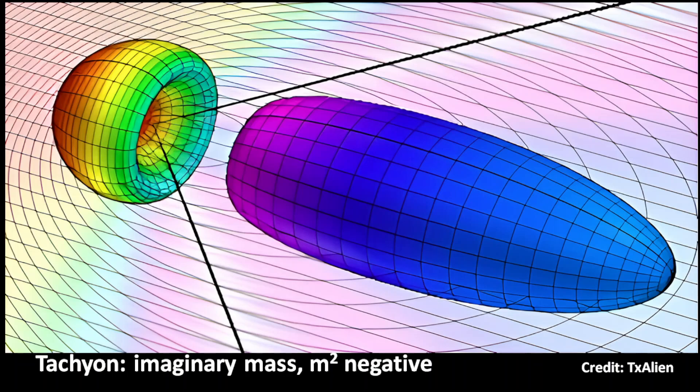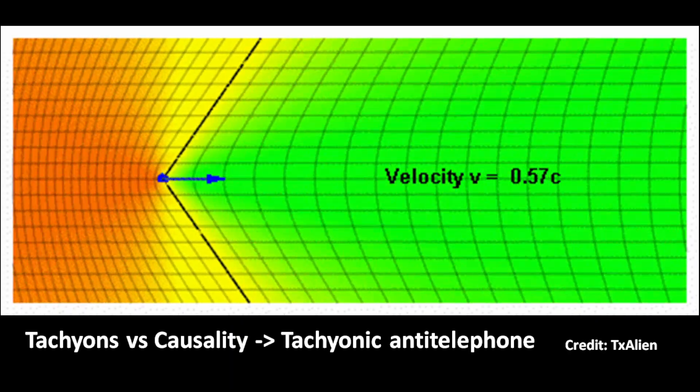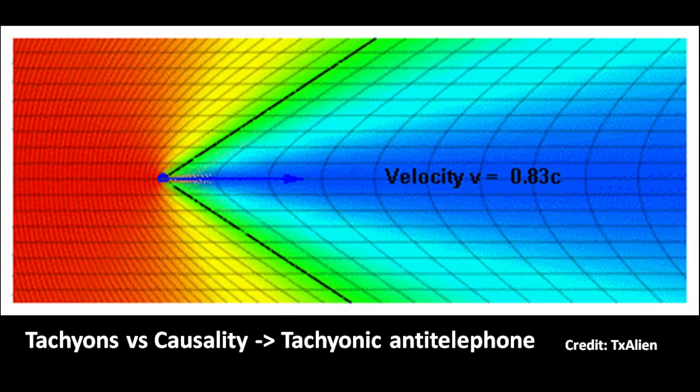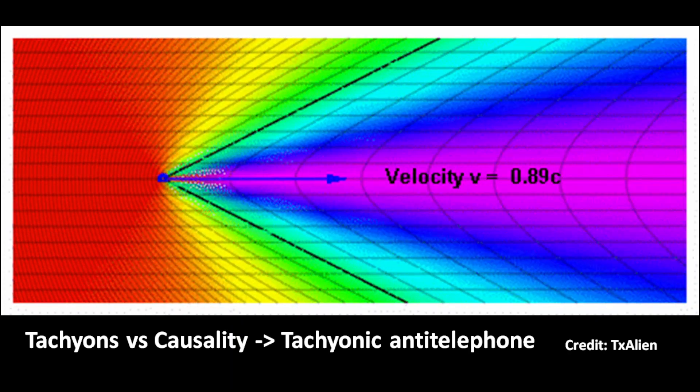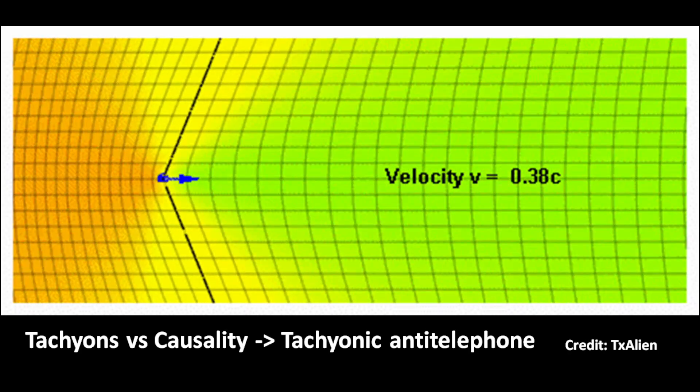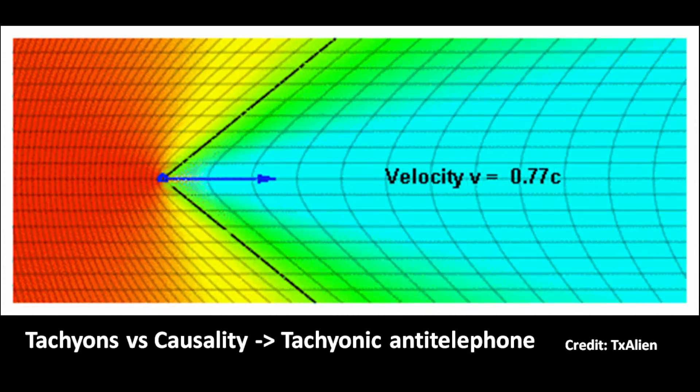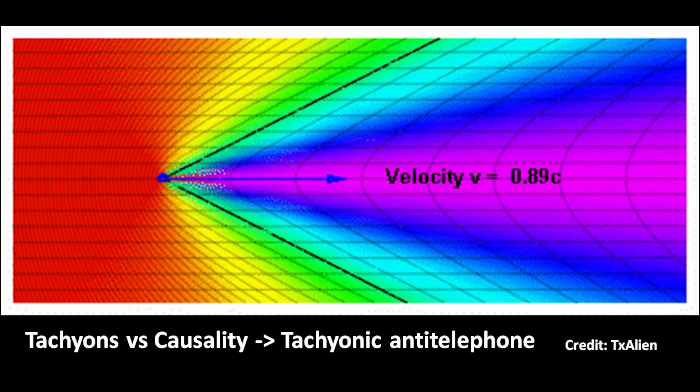Tachyons do not contradict the theory of relativity. However, tachyons violate causality, a basic principle of physics. They would allow the construction of a tachyonic antitelephone, a device that could send signals to the past. This phenomenon is also called Tolman's paradox.